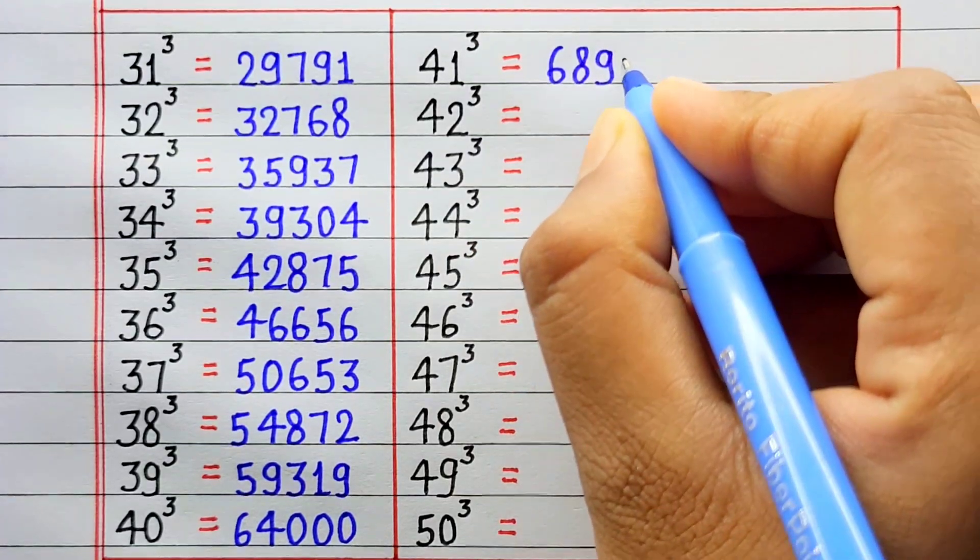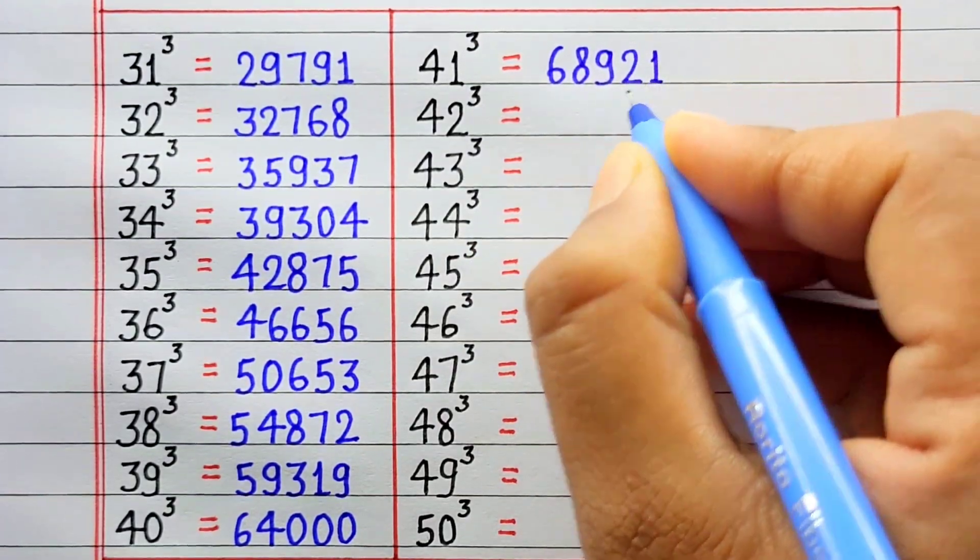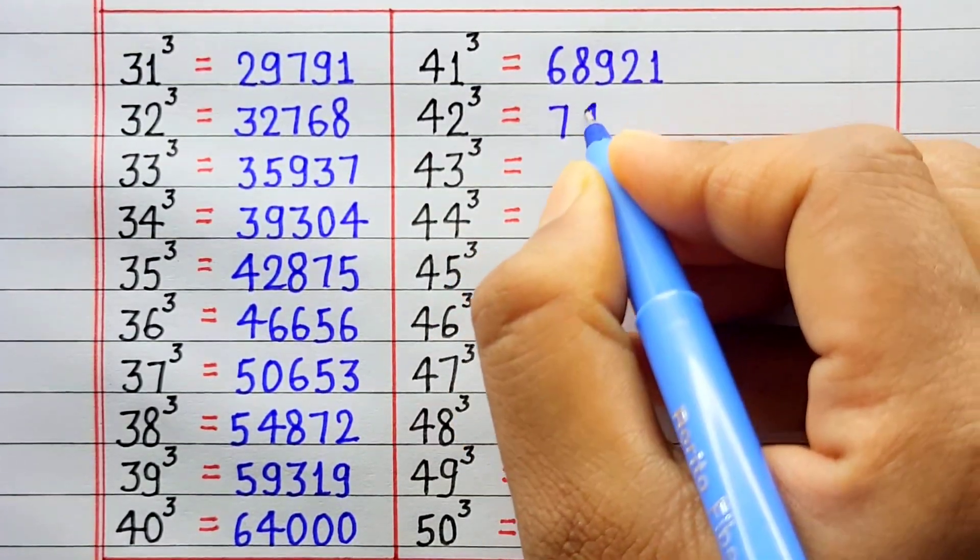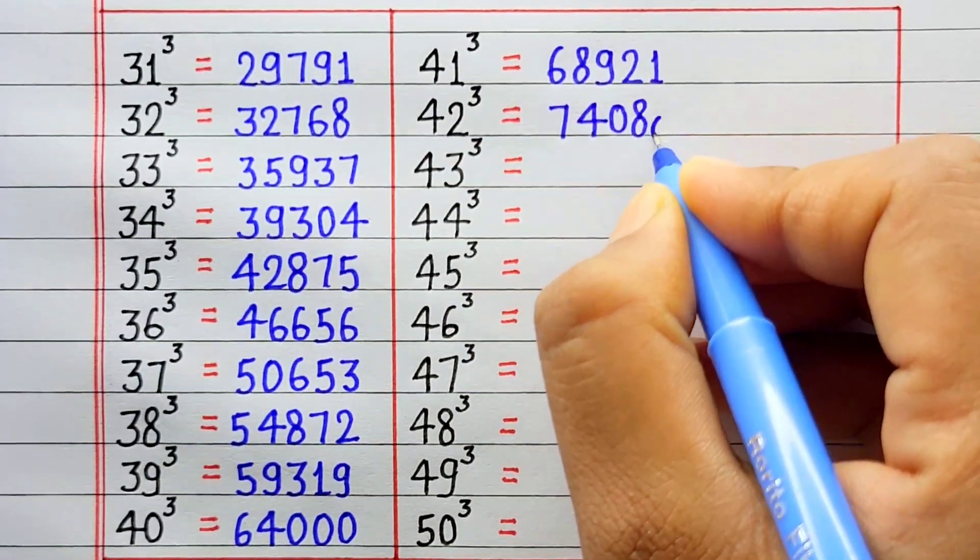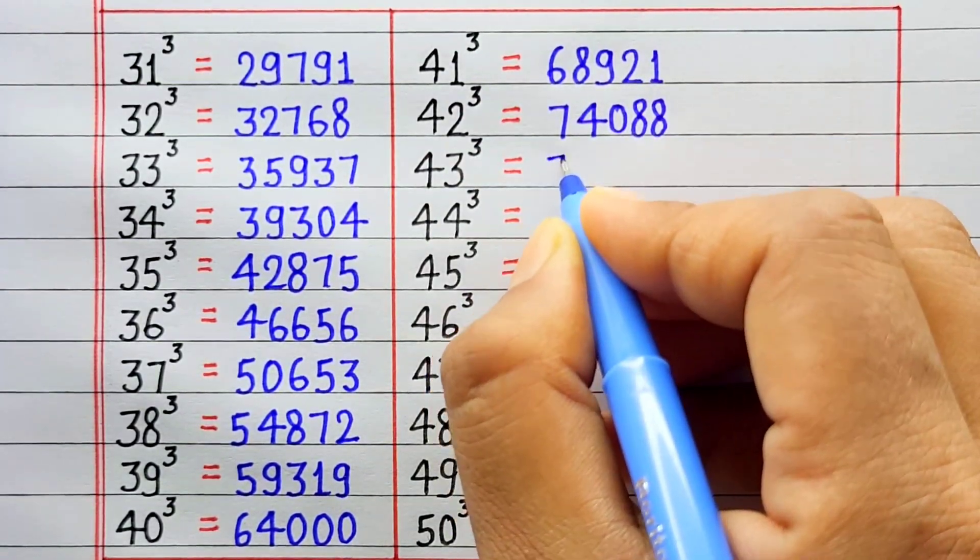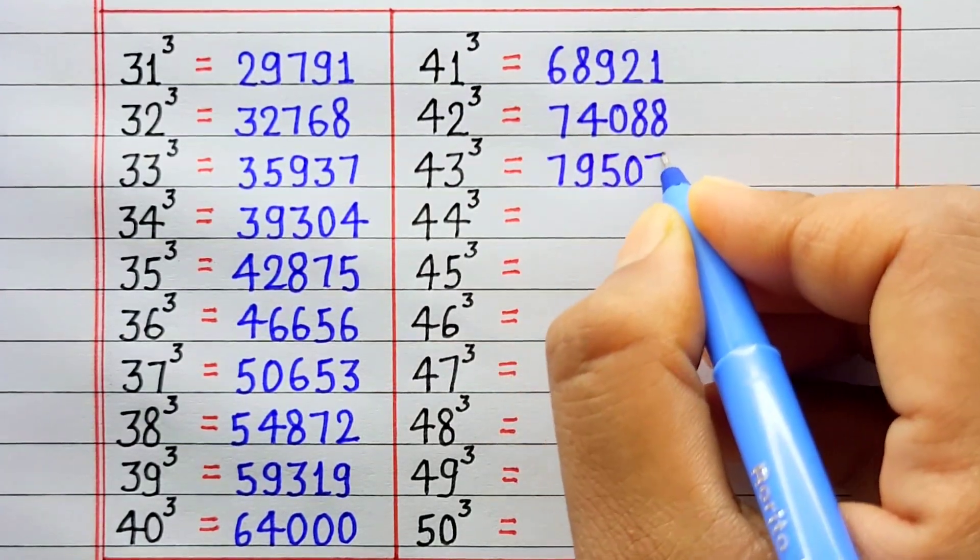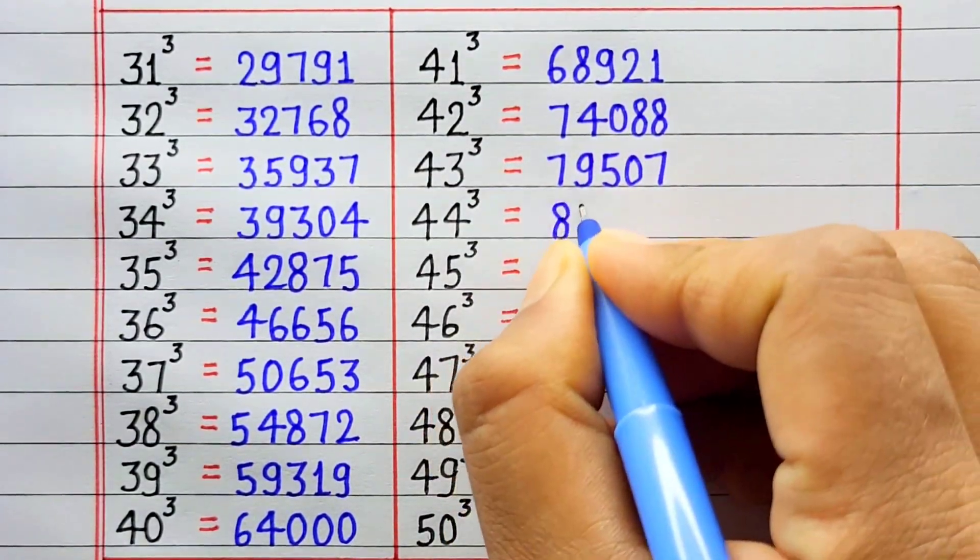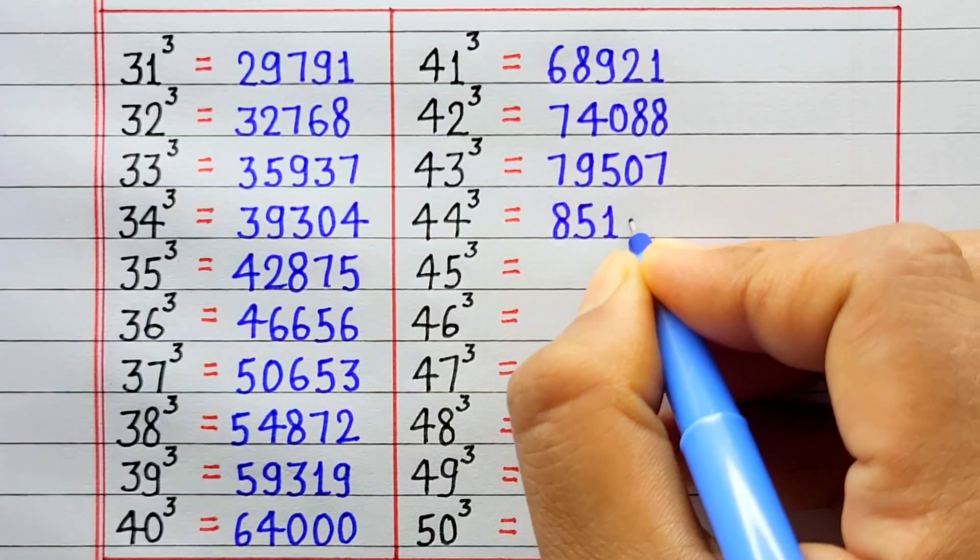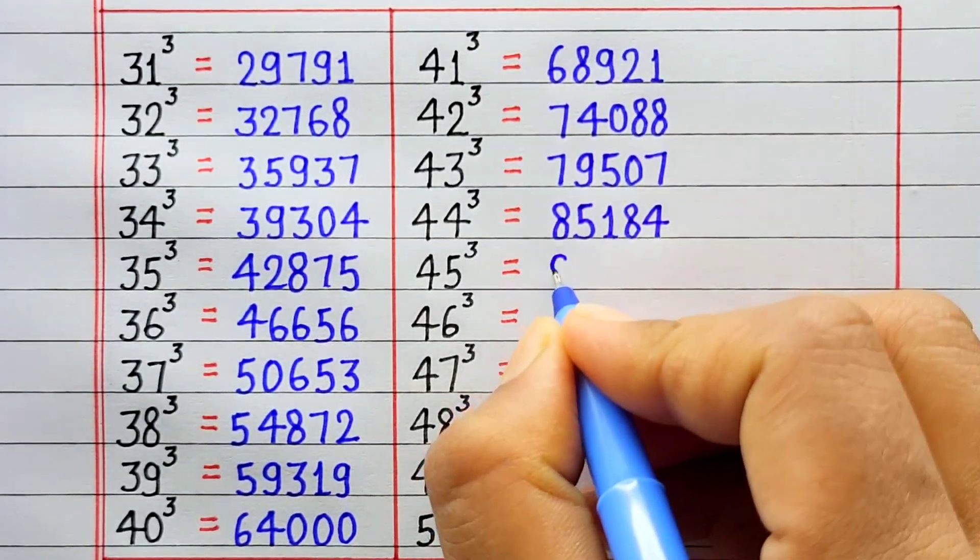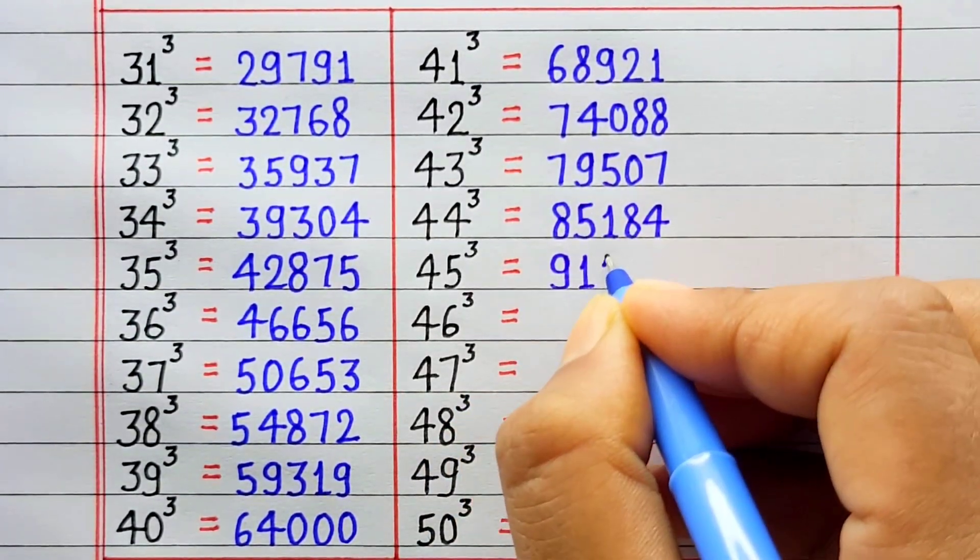Cube of 42 is 74088. Cube of 43 is 79507. Cube of 44 is 85184. Cube of 45 is 91125.